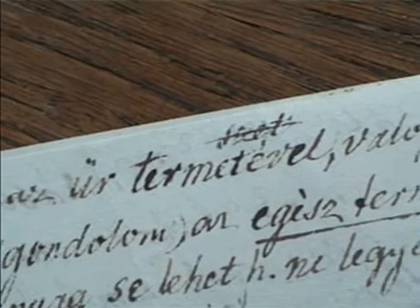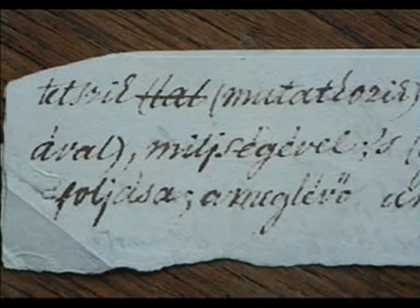Ez a következőképpen hangzik Bolyainak a tézisében: A nehézkedés törvénye is szoros összeköttetésbe tetszik mutatkozik az űr termetével, természetével, valójával, műségével. És akkor még oda van téve, hogy gondolom az egész világ folyása. És az alá van húzva. A modern kozmológiában a gravitáció az, ami megmondja, hogy tágul a világegyetem, vagy nem tágul a világegyetem, vagy sűrűsödik megint a világegyetem. Tehát ő erre is gondolt. Az Einstein-i tézis ismeretében talán rövidebben most se tudnánk megfogalmazni ezt.